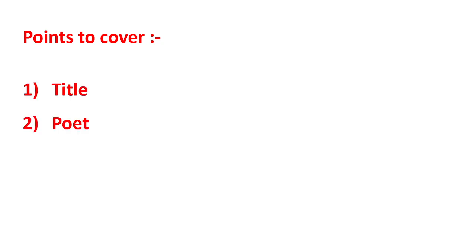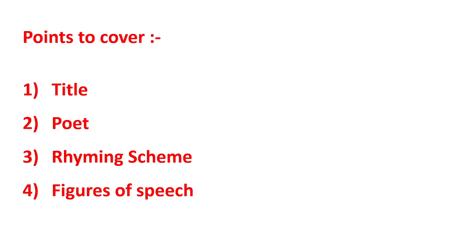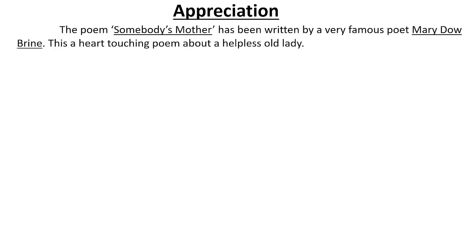So the points to cover — in the last video we discussed and did the appreciation of the poem 'Invictus.' The points are: title, poet, rhyming scheme, figures of speech, and central idea. These are the fixed points to repeat, because even in the 10th board examination these same points need to be covered. For five marks, you are not expected to write all points — some may be asked, one or two extra may come, but these are the confirmed ones. Keep this in mind.